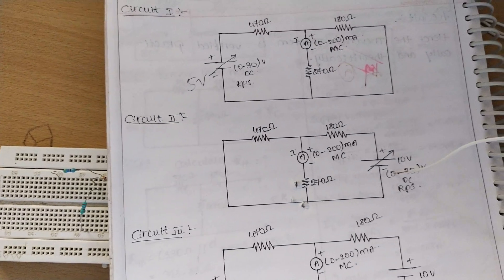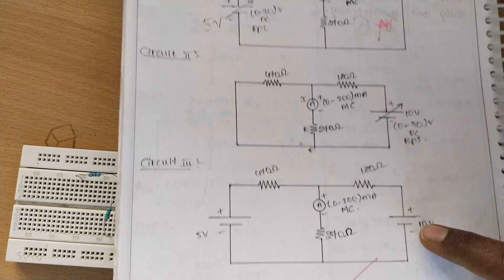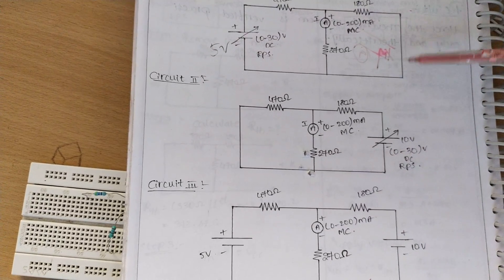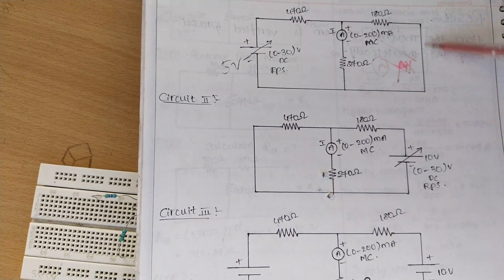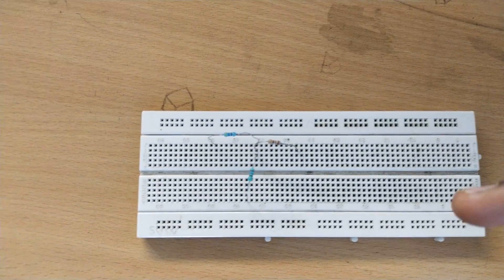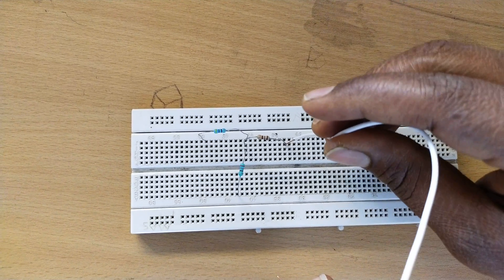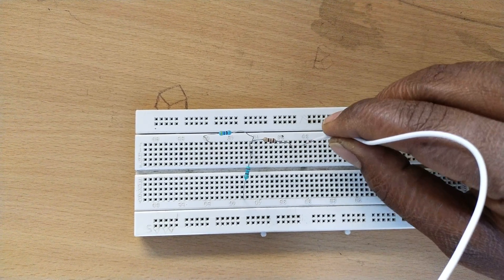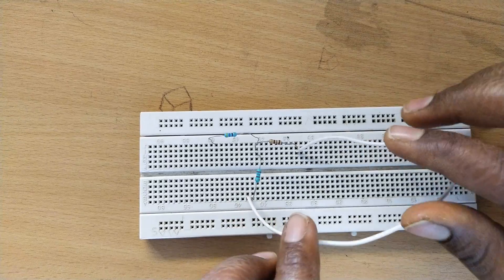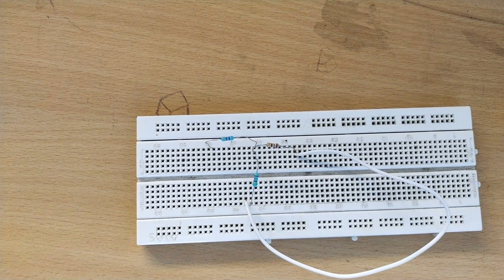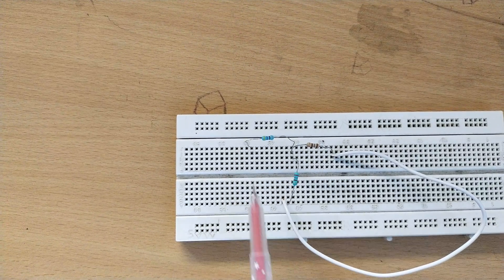First, we connect the 10 volt source. Then we consider only the 5 volt source, short-circuiting the 10 volt source with a wire. This short-circuits the 10 volt source, and then we connect the 5 volt source across the two terminals, connecting plus and minus.